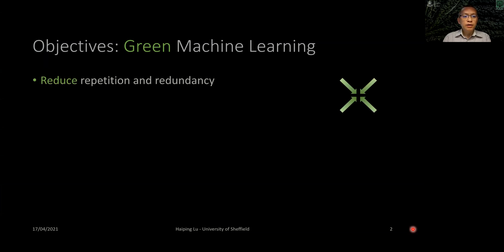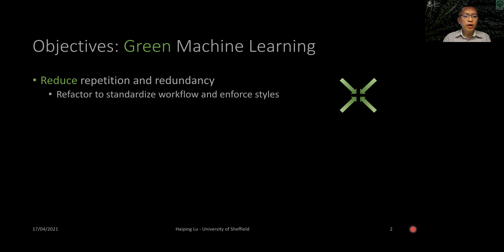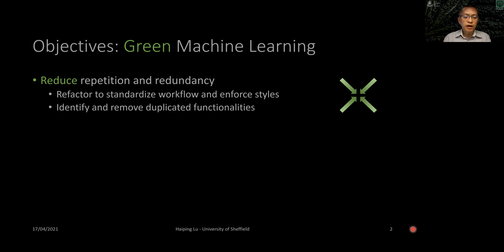The first objective is to reduce repetitions and redundancies in machine learning libraries. We refactor machine learning code to standardize the workflow and enforce styles. This can help us to identify and remove duplicated functionalities.